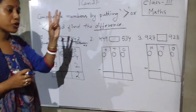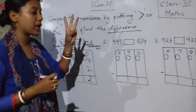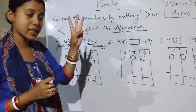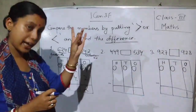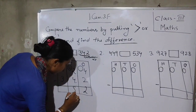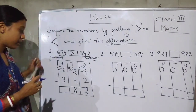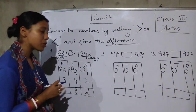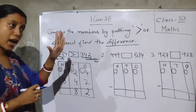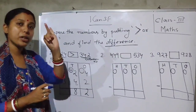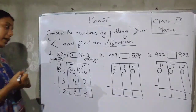12 minus 4: counting gives us 8. So here we write 8. Now, 5 minus 3 — since 5 is the greater number and 3 is the smaller number, we can subtract directly. 5 minus 3 is 2, so we write 2 here.